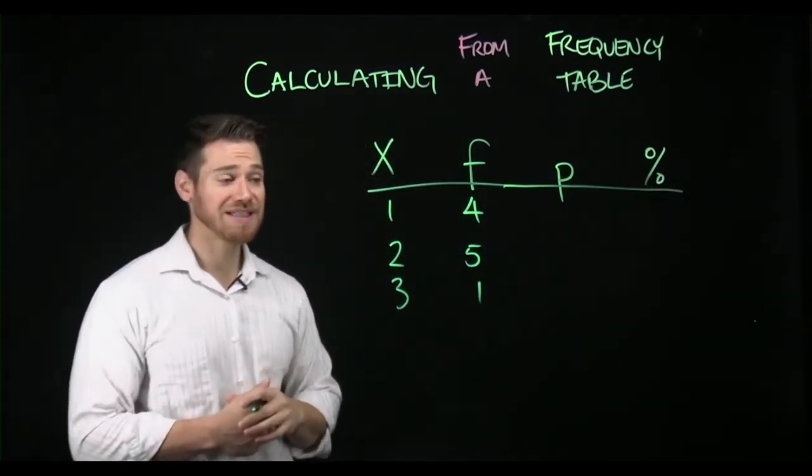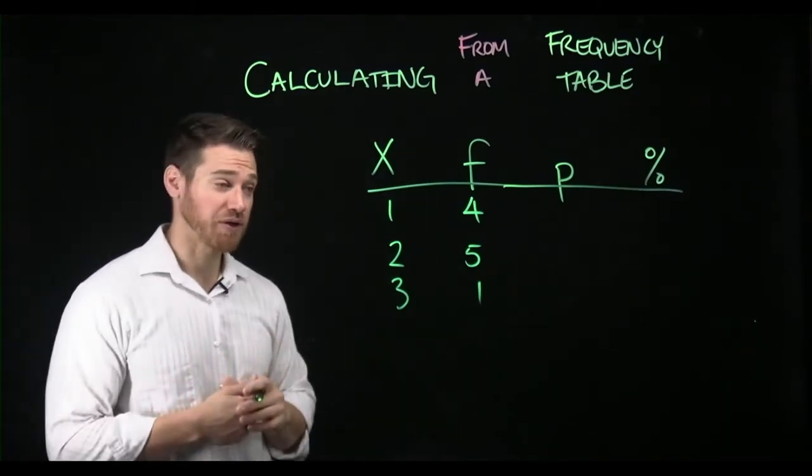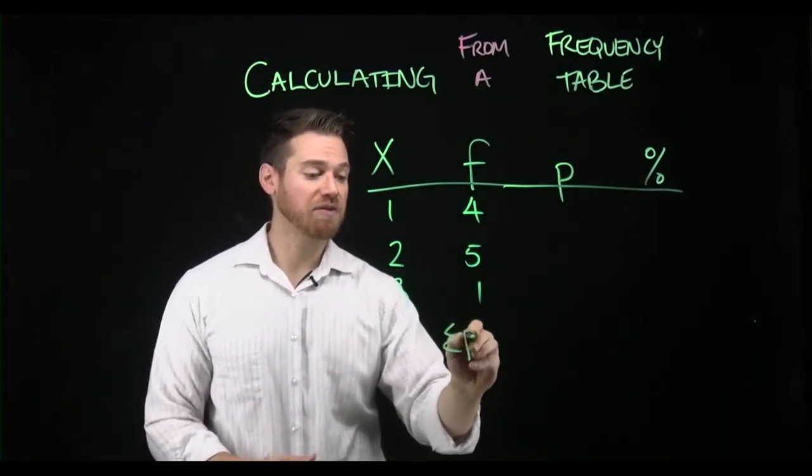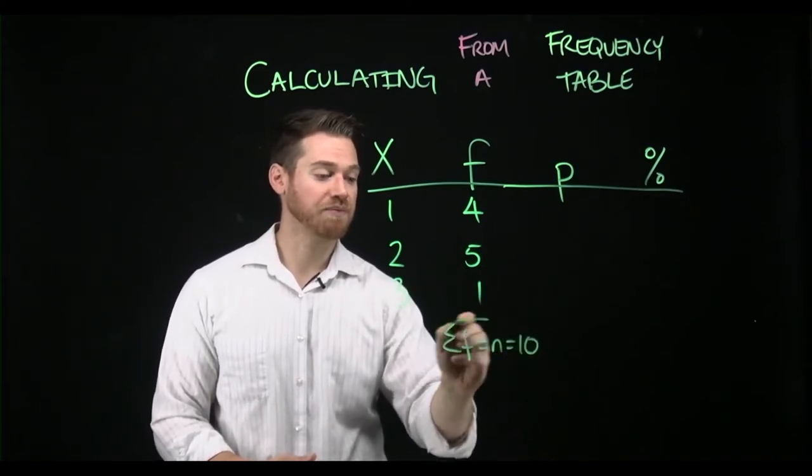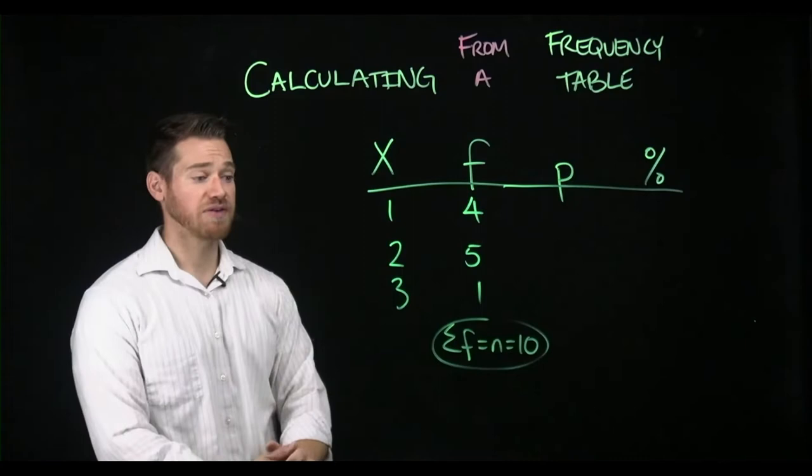So a proportion is simply saying, how many times does that value occur out of the whole? So if we do the sum of F, which we remember equals N, we see here that that value is 10. So we have a total of 10 observations for X.